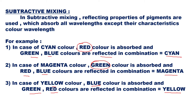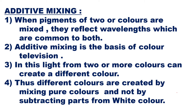In color TV, we use additive mixing. Additive mixing is when light from two or more colors is mixed — they reflect wavelengths common to both — and light from two or more colors creates a different color. Additive mixing is the basis of color TV. Different colors are created by mixing pure colors — red, green, and blue — and not by subtracting parts from white. From the basic primary colors, we produce all other colors.